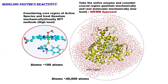Next, you can model enzyme reactivity. Reactions mainly take place in the enzyme at the active site, so we can model this active site — either taking only the active site or the total system in different ways. This approach to modeling enzymes will be explained in more detail later.